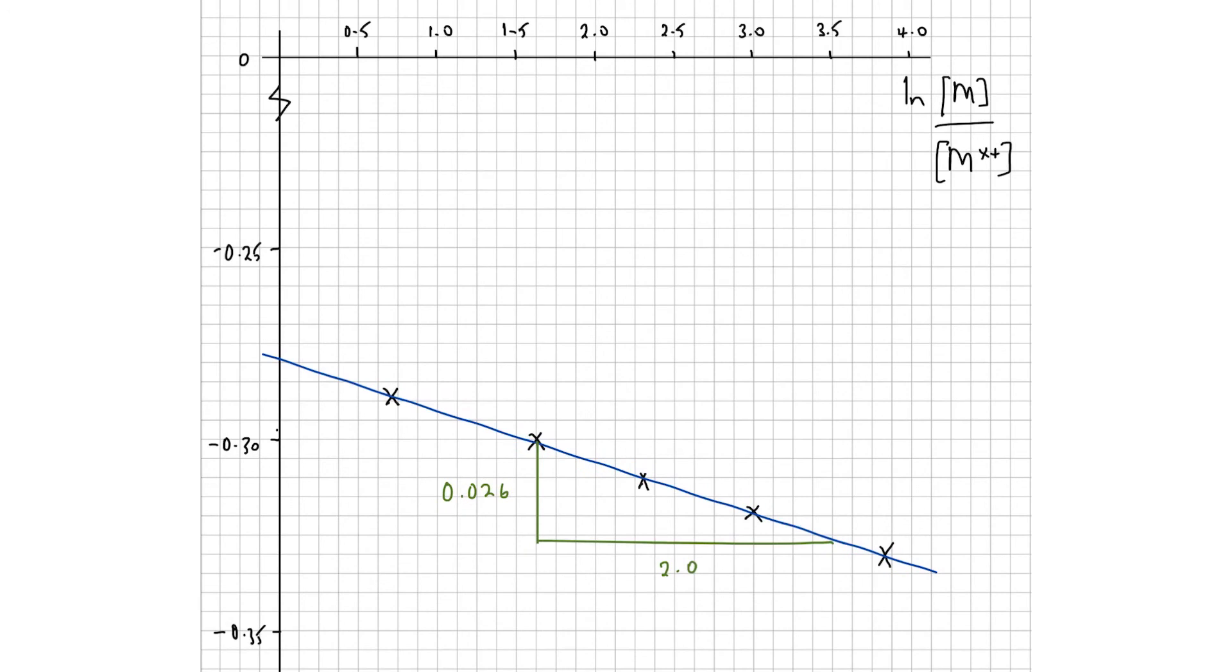The first part of the question asked us to come up with a number for the standard electrode potential. So our standard electrode potential implies that we're using standard conditions. So that is when the concentration of our ions is at 1.0 mol per decimeter cubed.